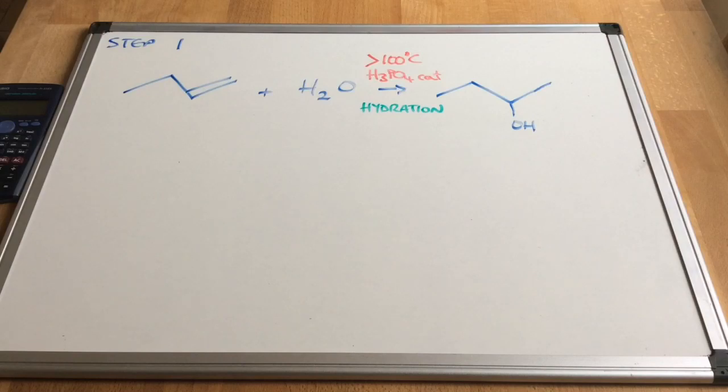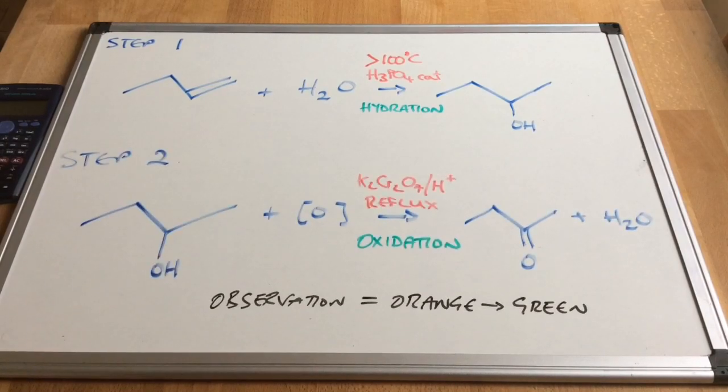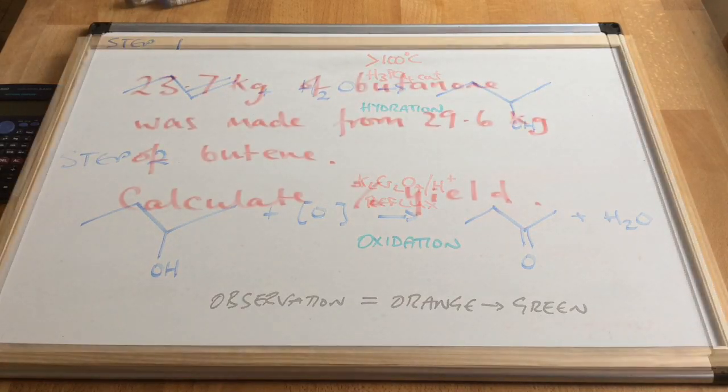There's step two: we are oxidizing the butan-2-ol to butanone, which would also create water. So we need acidified potassium dichromate under reflux, and the observation for this step - there wouldn't be an observation in step one - is an orange to green color change.